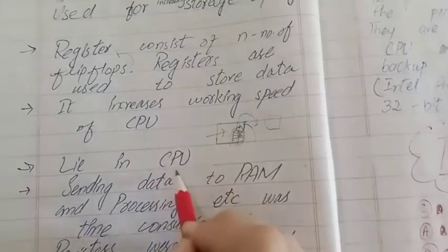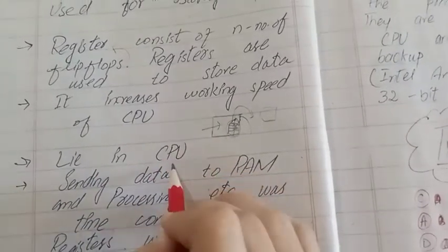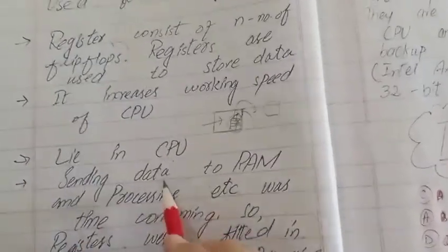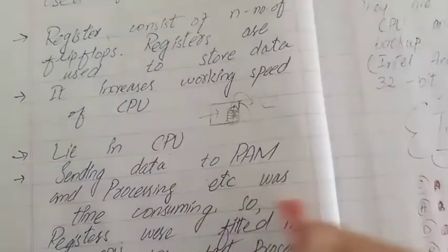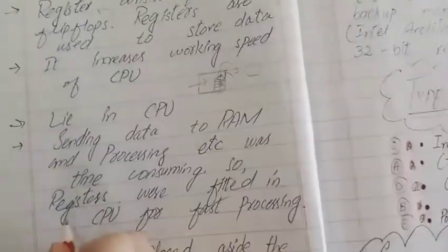The processor is used to send data to RAM and process data, which was time-consuming. So registers were fitted in CPU for fast working.